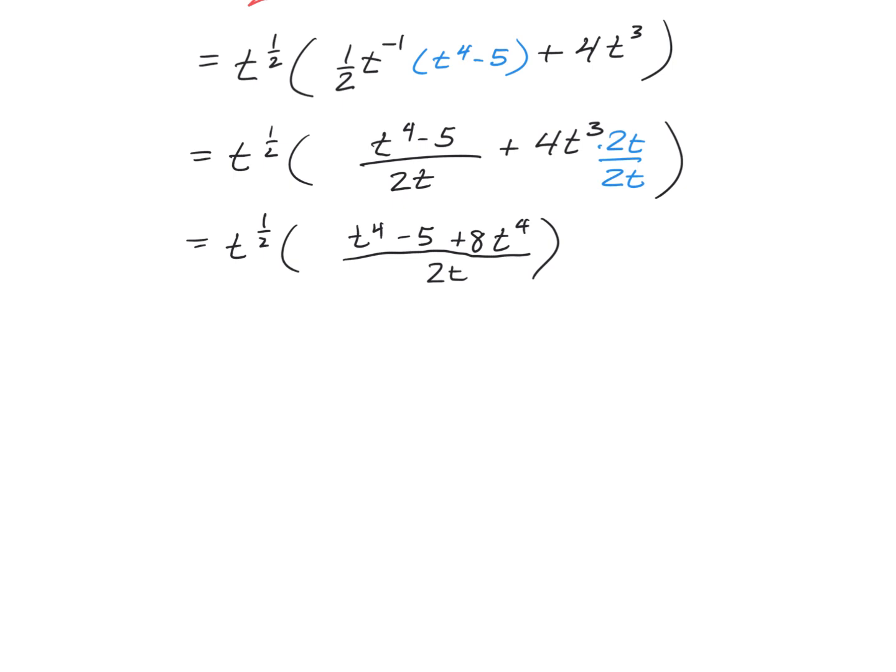We can combine those like terms and get t^(1/2) times (9t^4 - 5), all over 2t.